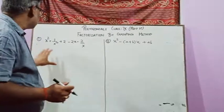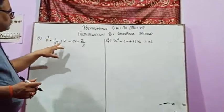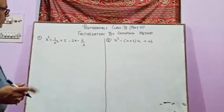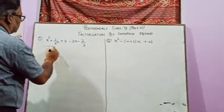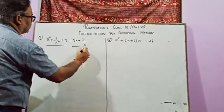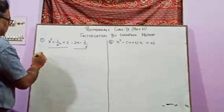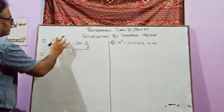We see here the first question: x squared plus one upon x squared plus two minus two x minus two upon x. If you are observing it here, you can just divide this question into two parts. This is one part and this is another part. After dividing this, you may decide that this is a perfect square.